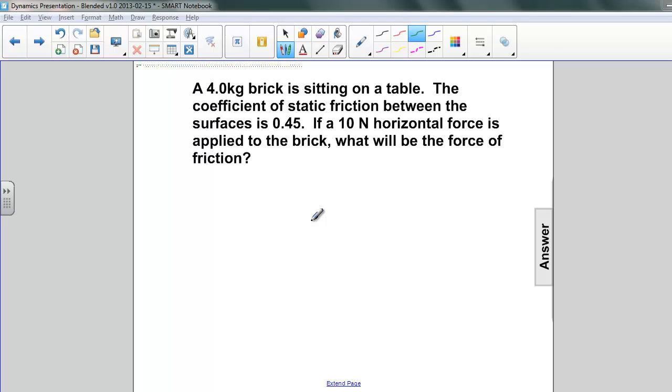This question is a follow-on to the last example. The same 4 kilogram brick is sitting on a table and is affected by the same coefficient of static friction between the surfaces, 0.45.